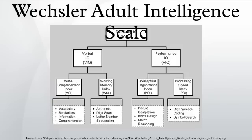There are four index scores representing major components of intelligence: verbal comprehension index, perceptual reasoning index, working memory index, and processing speed index. Two broad scores are also generated, which can be used to summarise general intellectual abilities: full-scale IQ, based on the total combined performance of the VCI, PRI, WMI, and PSI; and general ability index, based only on the six subtests that the VCI and PRI comprise.